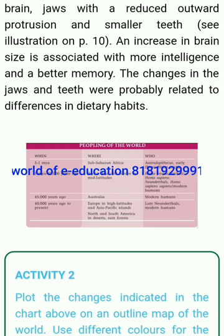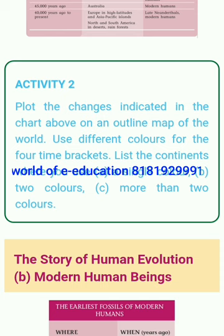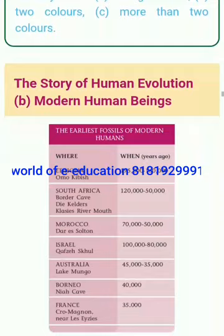Compared with Australopithecus, Homo have a larger brain, jaws with a reduced outward protrusion, and smaller teeth. An increase in brain size is associated with more intelligence and a better memory. Changes in the jaws and teeth were probably related to differences in dietary habits. Activity 2: Plot the changes indicated in the chart on an outline map of the world. Use different colors for the four time brackets. List the continents where you use a single color, two colors, or more than two colors.